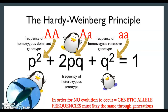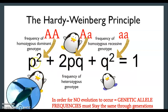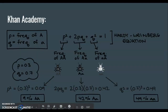Hardy-Weinberg looks super confusing, but it's really easy. The first thing to note is the formula P squared plus 2PQ plus Q squared equals one. P squared represents the homozygous dominant alleles within that population. 2PQ represents the heterozygous alleles in that population. Q squared represents the recessive alleles in that population. Therefore, one represents 100% of the population. In order for no evolution to occur, allele frequencies must stay the same throughout the generations.